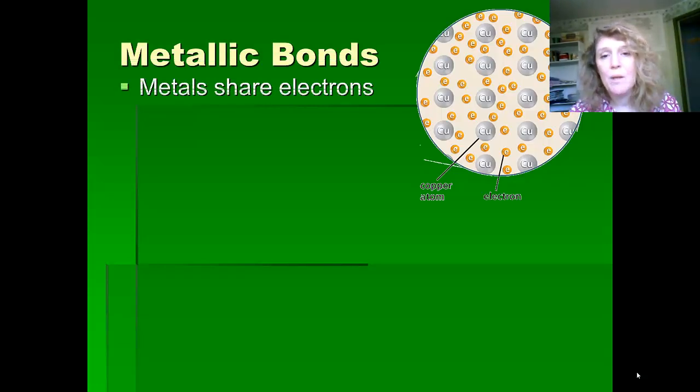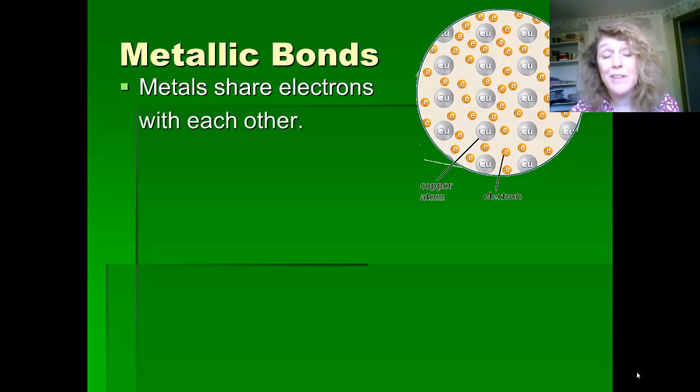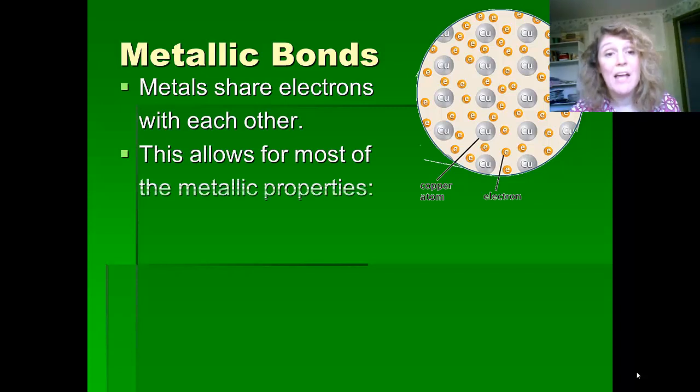We're going to start by looking at metallic bonds. Now, metals are kind of weird in that they all share electrons with each other, and this allows for most of the metallic properties.